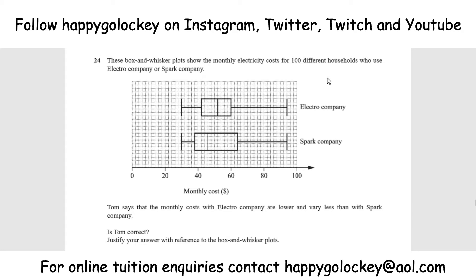So the question goes as follows. These box and whisker plots show the monthly electricity costs for 100 different households who use Electro Company or Spark Company. Tom says that the monthly costs with Electro Company are lower and vary less than with Spark Company. Is Tom correct? Justify your answer with reference to the box and whisker plots. Be warned, this is a four mark question, so lots to discuss.